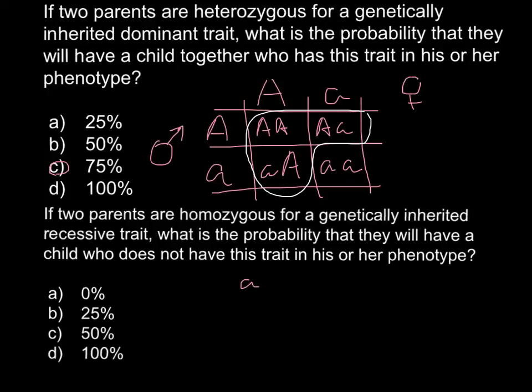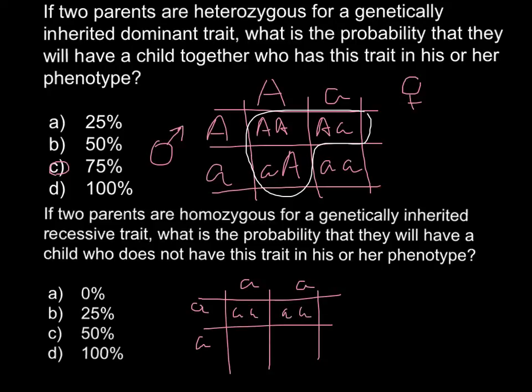So we're told that this is a homozygous recessive trait, and we probably even don't have to build a Punnett square here. So we see that if two parents are both homozygous for any trait, it doesn't matter if it is dominant or recessive.